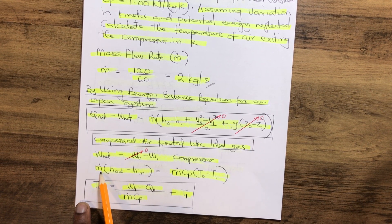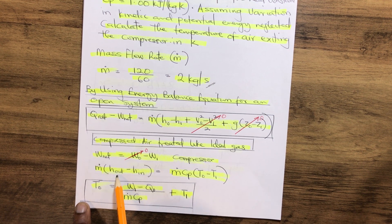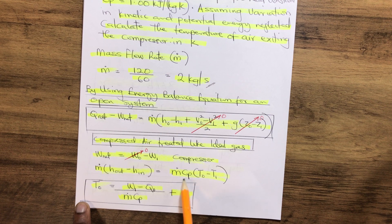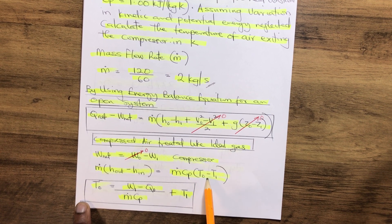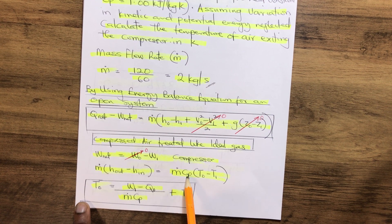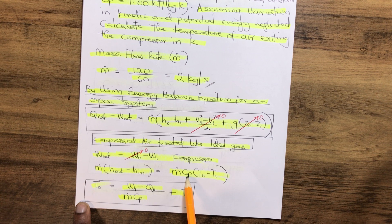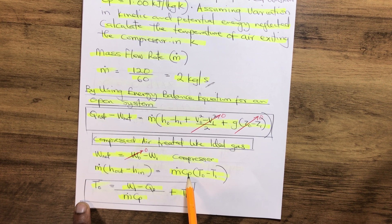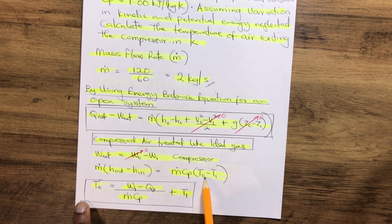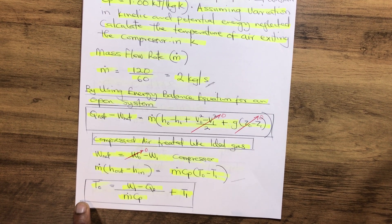Now as an ideal gas, m, which is the mass flow rate multiplied by the variation in enthalpy, equals m Cp times T0 minus T1. So therefore it becomes the product of the mass flow rate times the specific heat constant Cp multiplied by the variation in the temperature. So as an ideal gas we have that.